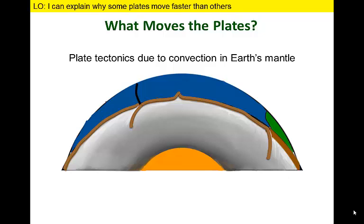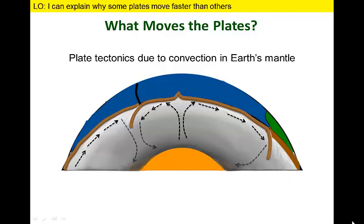Before we figure out why some plates are fast and some are slow, think about why plates move at all. Recall that plates are in motion as a result of convection currents in the mantle. Convection releases internal heat left over from the planet's formation, and heat generated by the decay of radioactive elements in the core and mantle.